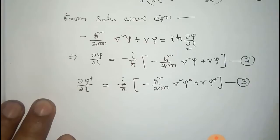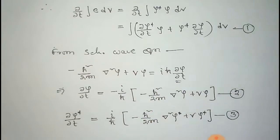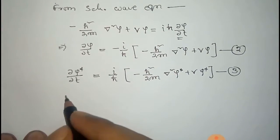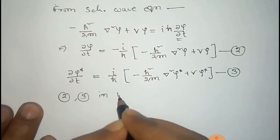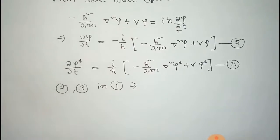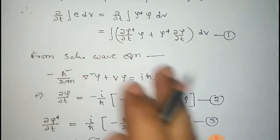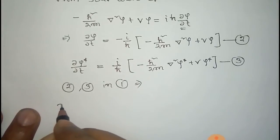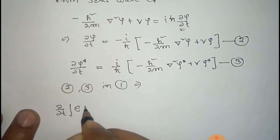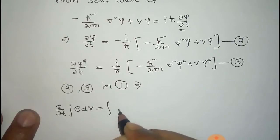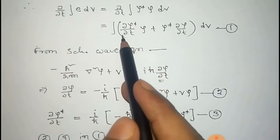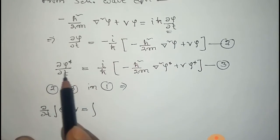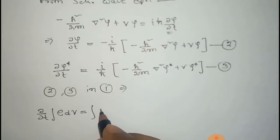Now we substitute equations two and three into equation one. So from equation one, ∂/∂t of the integral of ρ dV equals the total integral of these substituted terms.